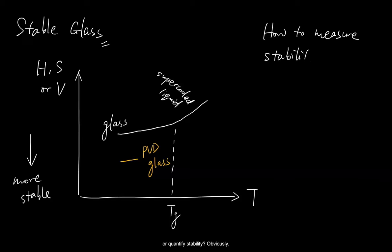How do we measure stability, or quantify stability? Obviously, we cannot note the absolute value of enthalpy or entropy, so we can boil down to looking at something measurable, like volume. If you're thinking about comparing the difference in volume between PVD glass and liquid quenched glass, you're on the right track. And if this volume difference is normalized against the volume of a standard liquid quenched glass, then we can get a relative density increase, exactly what we need for a figure of merit.